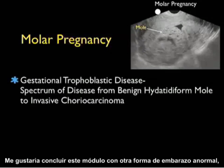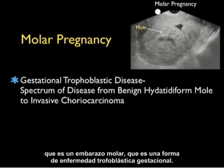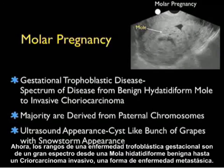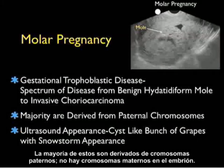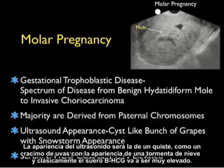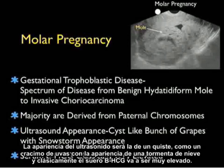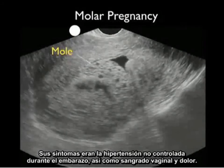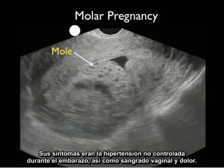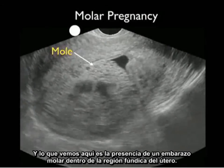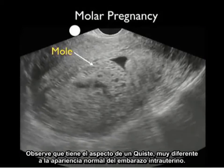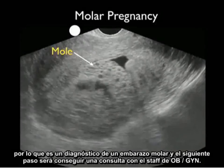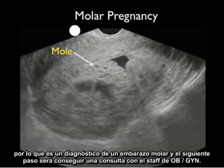I'd like to conclude this module with another form of abnormal pregnancy: a molar pregnancy, which is a form of gestational trophoblastic disease. This ranges from a benign hydatidiform mole to invasive choriocarcinoma. The majority are derived from paternal chromosomes with no maternal chromosomes in the embryo. The ultrasound appearance is a cyst-like bunch of grapes with a snowstorm-type appearance, and classically the serum beta-HCG will be very elevated. Here's video from a patient presenting with uncontrolled hypertension, vaginal bleeding, and pain, showing a molar pregnancy within the fundal region of the uterus — almost like a bunch of grapes — prompting a stat OB-GYN consultation.